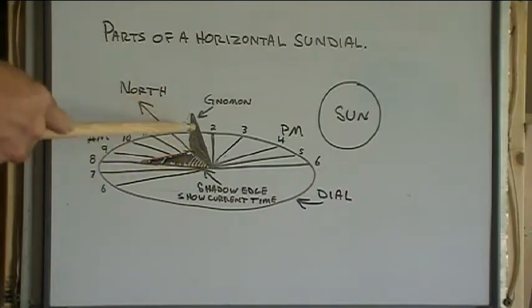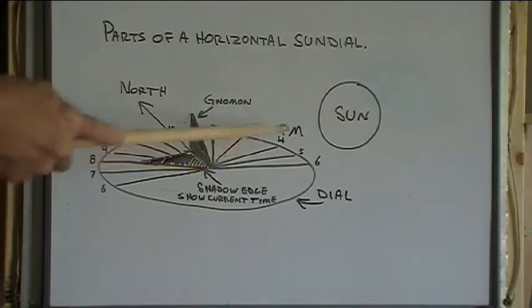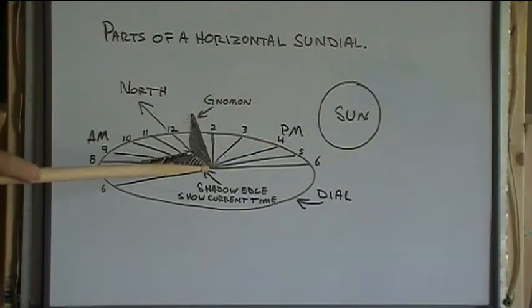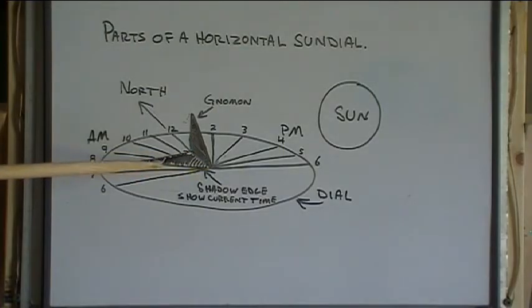The angle of the gnomon is also calculated depending on the latitude you're on on the earth. So the sun shines across here and creates a shadow. This angled edge, not the 90 degree portion, but the angled edge, and where its shadow falls is what shows us the time of day.